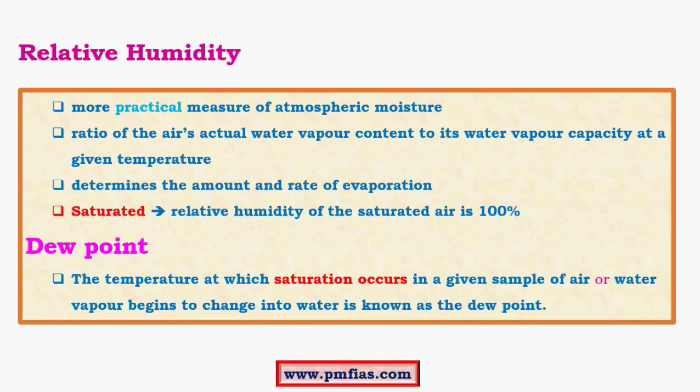Dew point is an important concept based on relative humidity. It is the temperature at which saturation occurs. At dew point, gaseous water vapor gets converted into liquid water — it changes state from gas to liquid. This is essentially condensation. So dew point is the temperature at which condensation occurs, and condensation occurs when air has reached its maximum water vapor holding capacity.